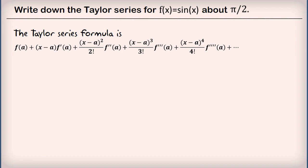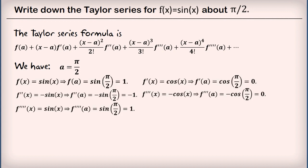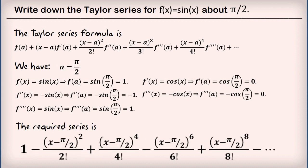So clearly we need to know what a is. And we're told it's about pi on 2. That tells us that a equals pi on 2. And we need to now know the value of f and its derivatives at the value a. And there are the calculations there. And we can see that there's a pattern that the odd derivatives are always equal to 0. And the even derivatives oscillate between 1 and minus 1. So I would end by then saying the required series is. And you can see it on the screen.